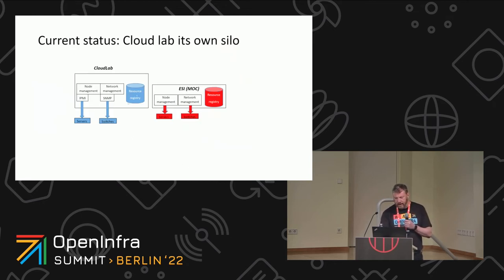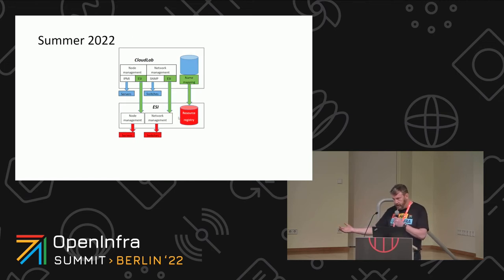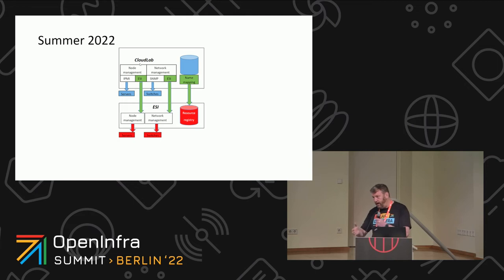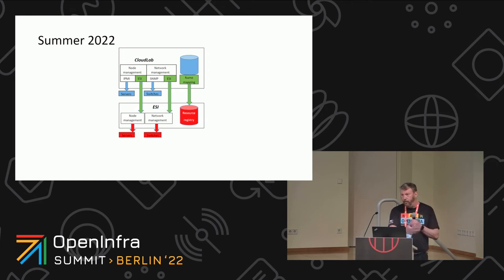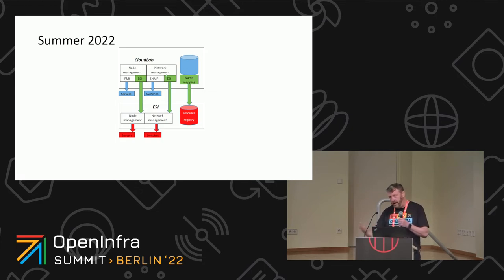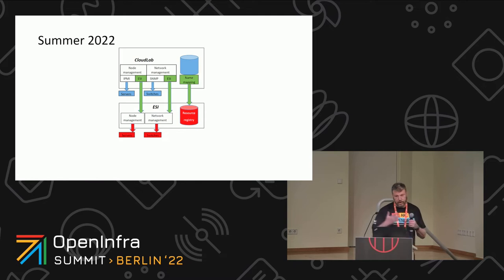Right now we have a CloudLab installation on about 200 servers, and separately we're standing up ESI. The goal is to move all infrastructure, including the 40 racks for other use cases, to being on top of ESI. We're building drivers: CloudLab has drivers to deal with different hardware, much like Ironic does, and drivers to deal with switches, much like Neutron does. ESI becomes a driver added in for hardware operations and network management. Once we manually move infrastructure between ESI and the testbed, it can use that infrastructure and deploy what it wants on top of it.